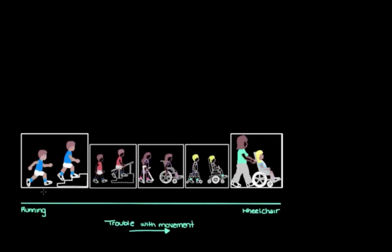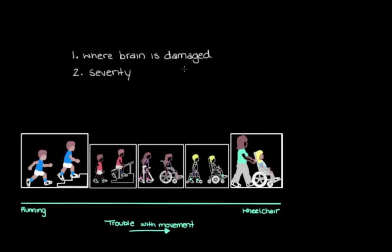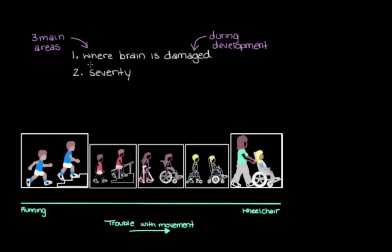Someone with cerebral palsy can fall anywhere along a really wide spectrum of movement impairments. What dictates where they end up on this spectrum — how severe their movement impairments will be — boils down to two things: where the brain is damaged or underdeveloped, and how severe the damage is. This damage occurs because of some event like an infection or a stroke during critical periods of early development, anywhere from in utero to the first few years of life. There are three main movement areas in the brain that, when damaged, can cause cerebral palsy. Depending on which movement area is primarily affected, that determines what type of cerebral palsy the person has, because cerebral palsy is an umbrella term describing a few different disorders that affect movement.